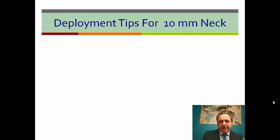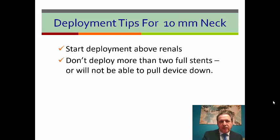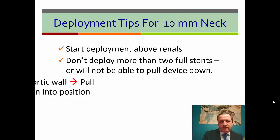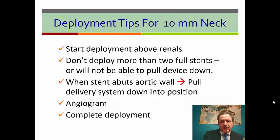What are the deployment tips for a 10 mm neck? First, start to deploy above the renal arteries, because it's always easier to pull the device down than push it up. Don't deploy more than two full stents or you will not be able to pull the device down. When the stent aposes the aortic wall, pull the delivery system down into position, do an angiogram to confirm your position, and then complete your deployment.